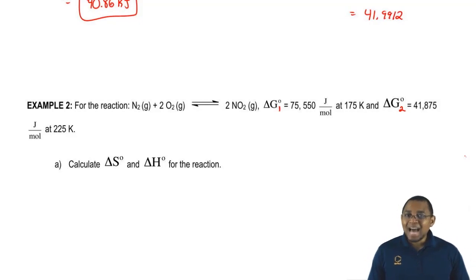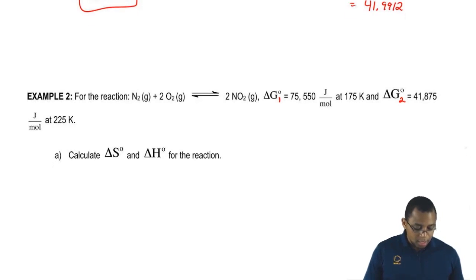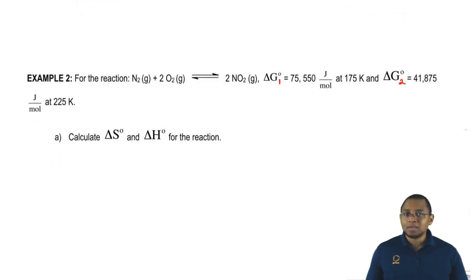It's asking us to calculate delta S and delta H for the reaction. This is what we're going to do for this particular one. Since we're dealing with two types of delta G here.